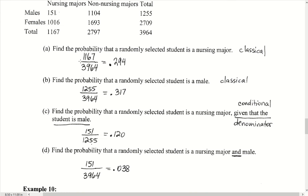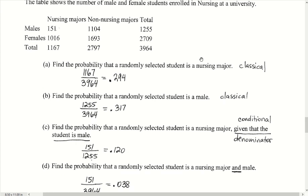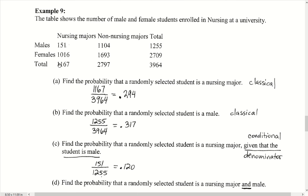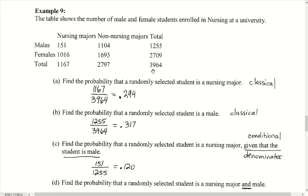The first question says: suppose we randomly select a student — find the probability that they are a nursing major. For this we use the classical model of probability. The number of nursing majors is this column total, giving us 1,167 out of the total of 3,964 students. Dividing those gives us 0.294.